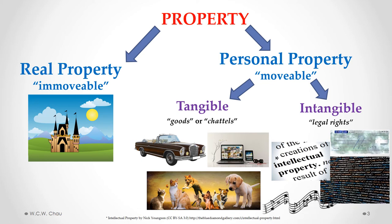Also included most notably in intangible property is any kind of intellectual property, which we will deal with in the next module. So things like computer software — while the computer itself is tangible, the software that runs it, the computer code, is intellectual property that is owned by someone. Other pieces of intellectual property could be copyright over music, films, or TV shows. All of that is intangible personal property that someone can have a legal right over.